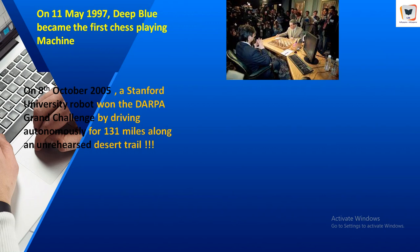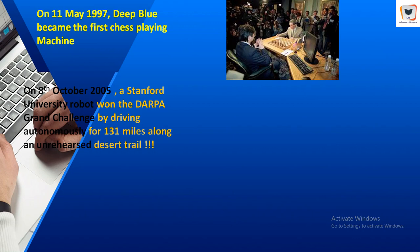Meanwhile, in 2009, the Blue Brain Project team announced that they had successfully simulated parts of a rat's cortex. Moore's Law indicates that the speed and memory capacity of computers doubles every two years, meaning that the earlier problems faced by AI systems are quite rapidly being overcome by mere computing power. Each year sees some claim or other that Moore's Law will come to an end due to limiting factors of size, heat, or cost.